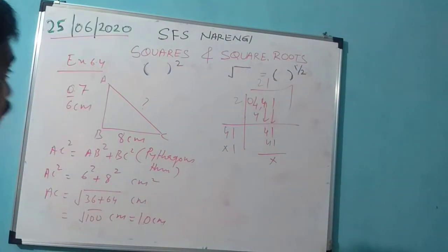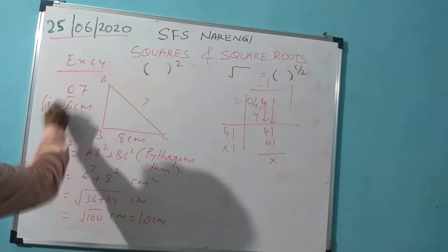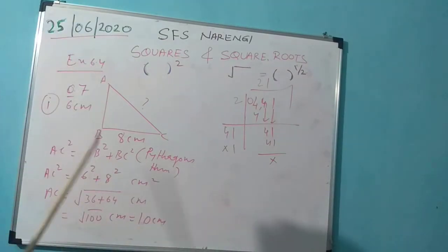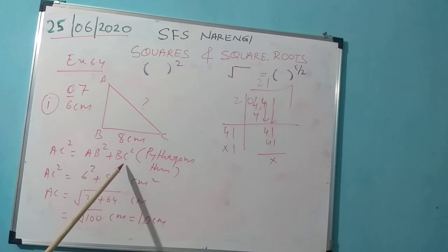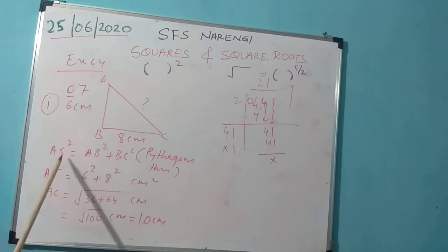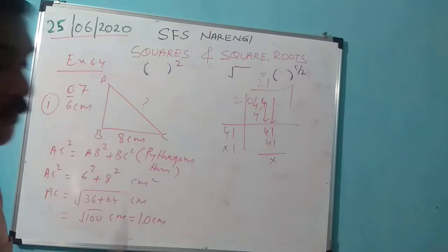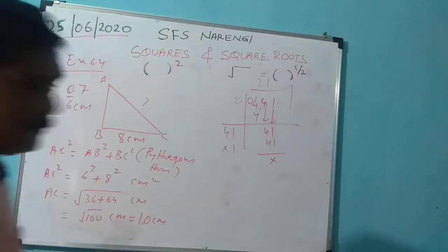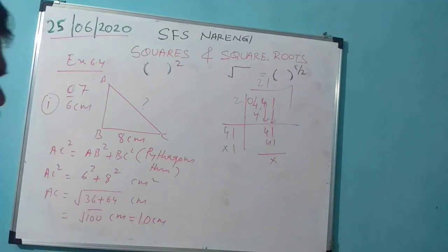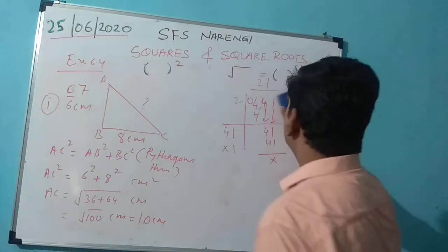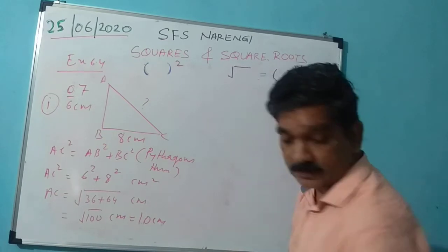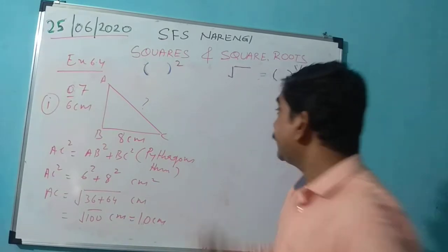That is question number 7, first part. For the second part, try it yourself: if you have to find AB, subtract BC² from AC² and then find the square root. It's not that difficult. Now let's do question number 9.